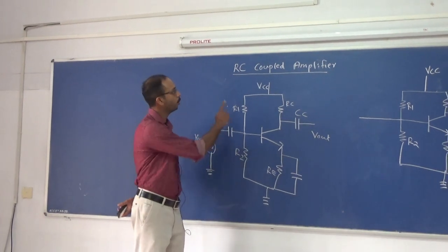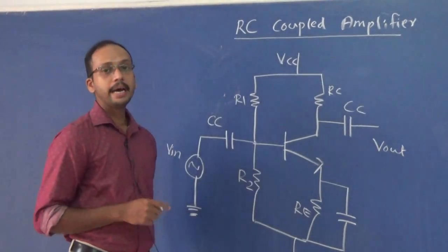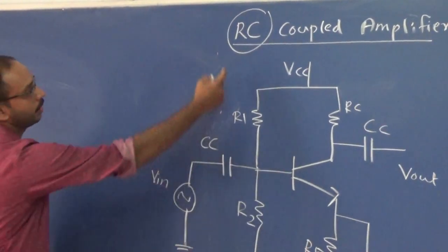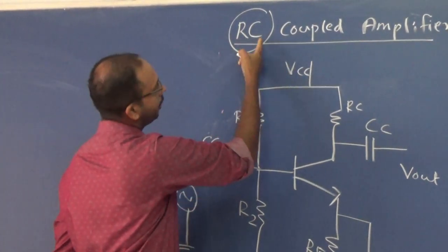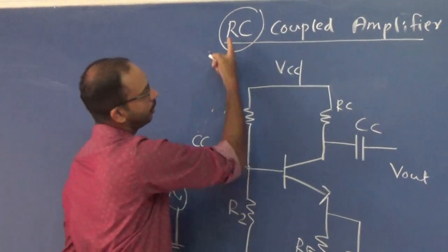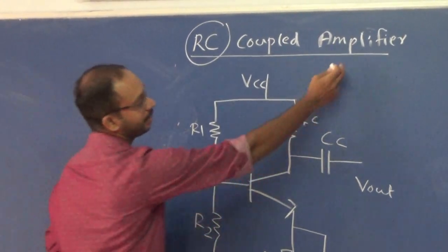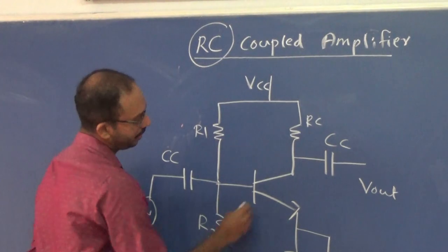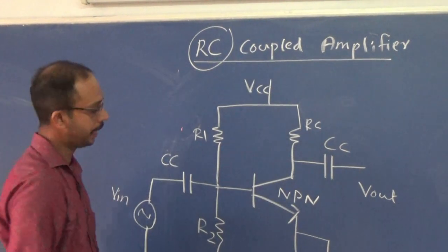In this video we are going to discuss the RC coupled amplifier circuit. From the name itself, R indicates resistors and C indicates capacitors — so RC means a resistor-capacitor combination. With one NPN transistor, this combination makes an amplifier. The transistor used is an NPN transistor and the configuration used is common emitter configuration, meaning the emitter is common for both the input base and the output collector.